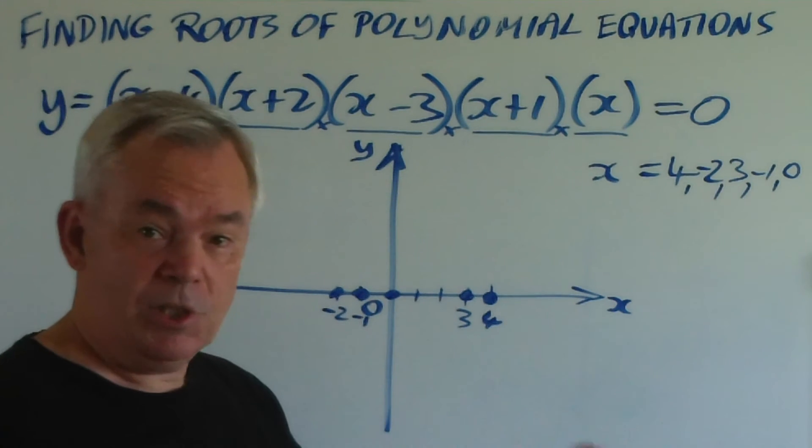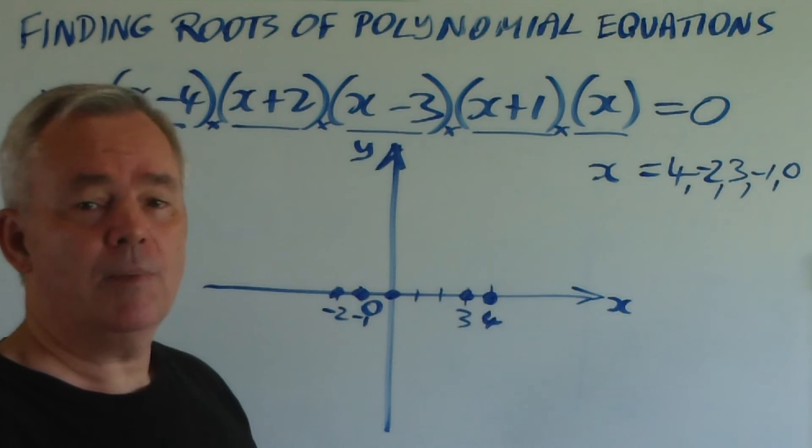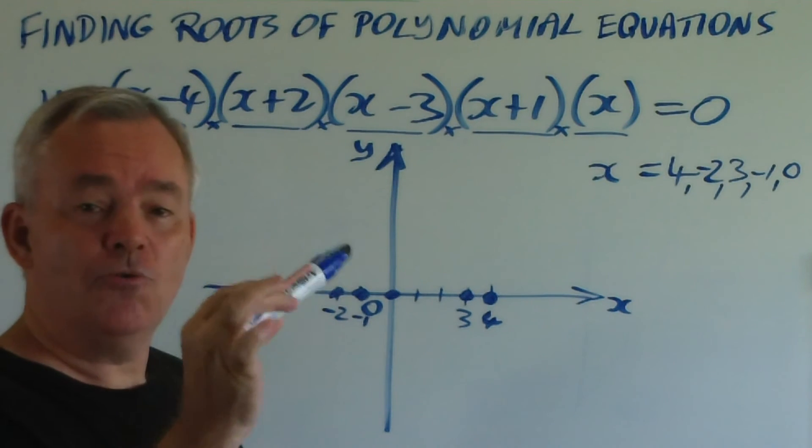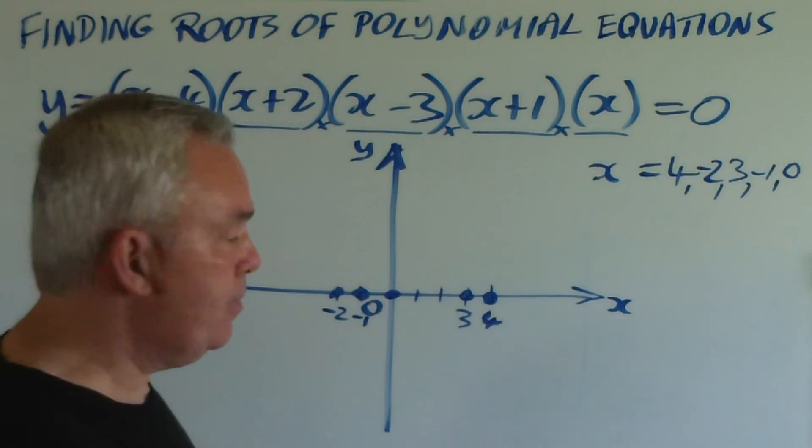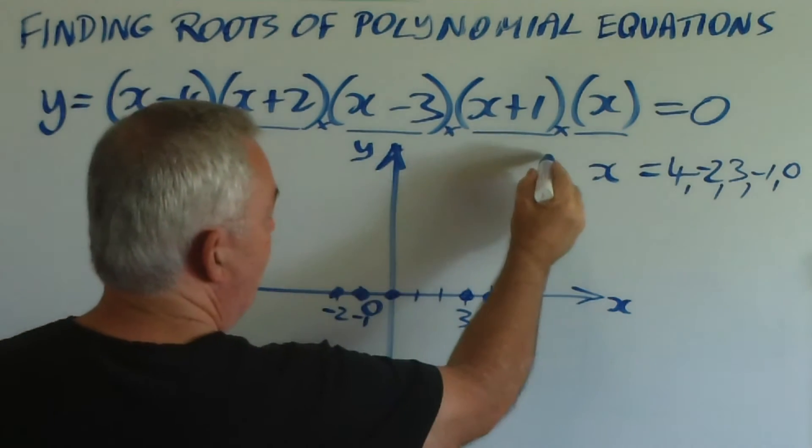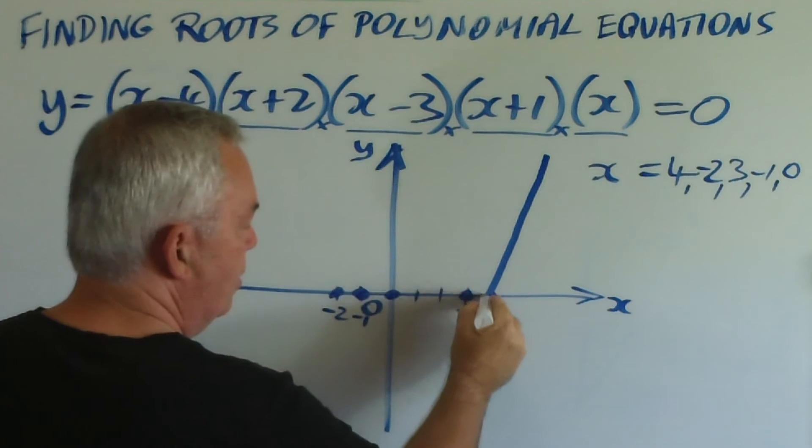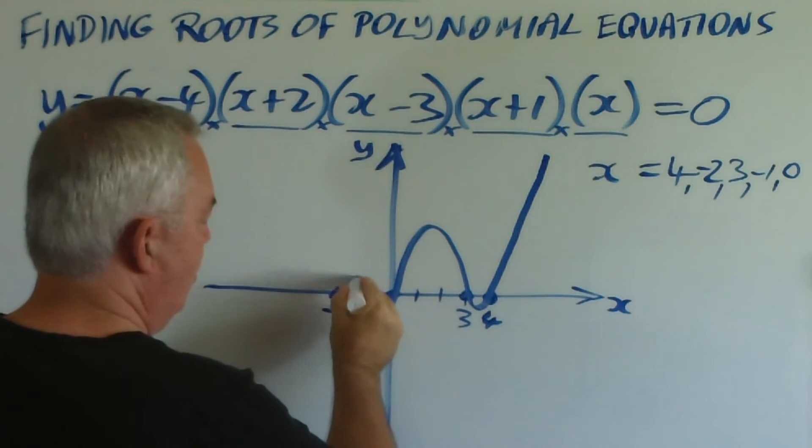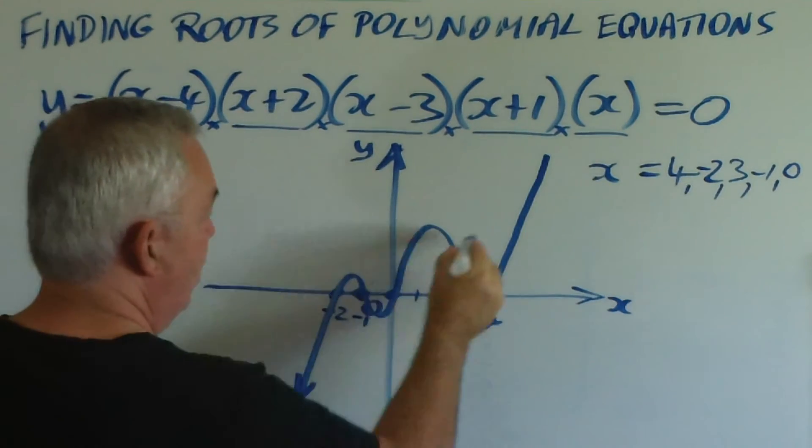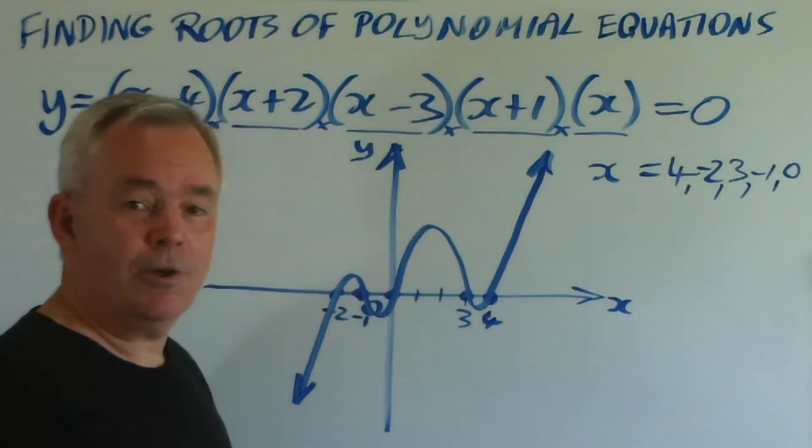Now, the nice thing that I didn't explain earlier about polynomial equations is that they are continuous. That is, you can draw them without taking your pen off the paper or the whiteboard. And this graph must go down through this point, up through this one, down through that one, up through that one, and down there. And there's our graph. It is wonderfully simple to do.